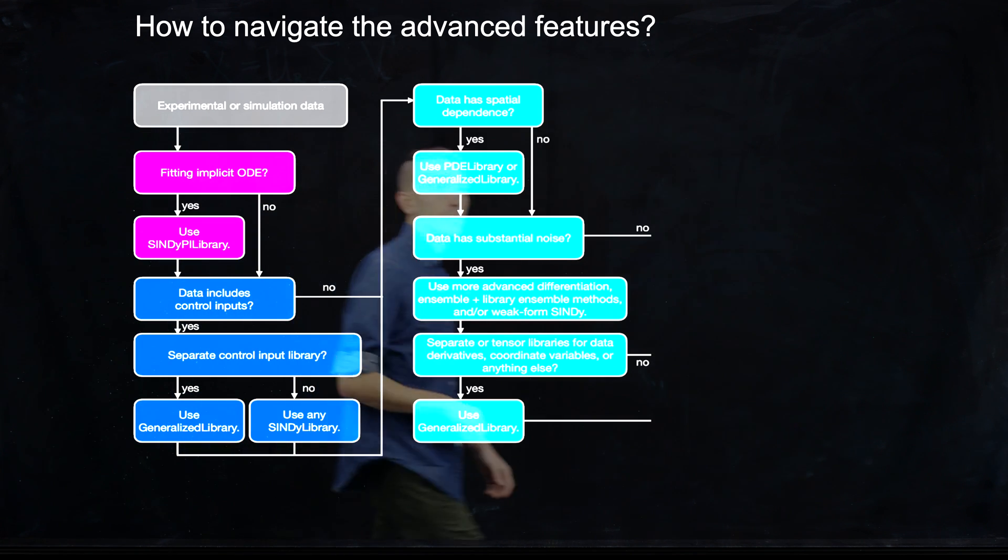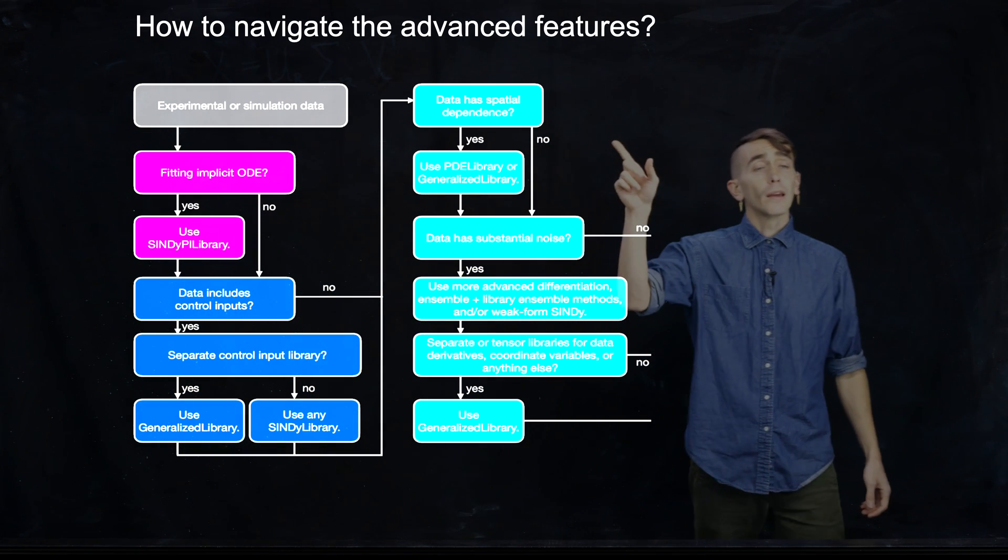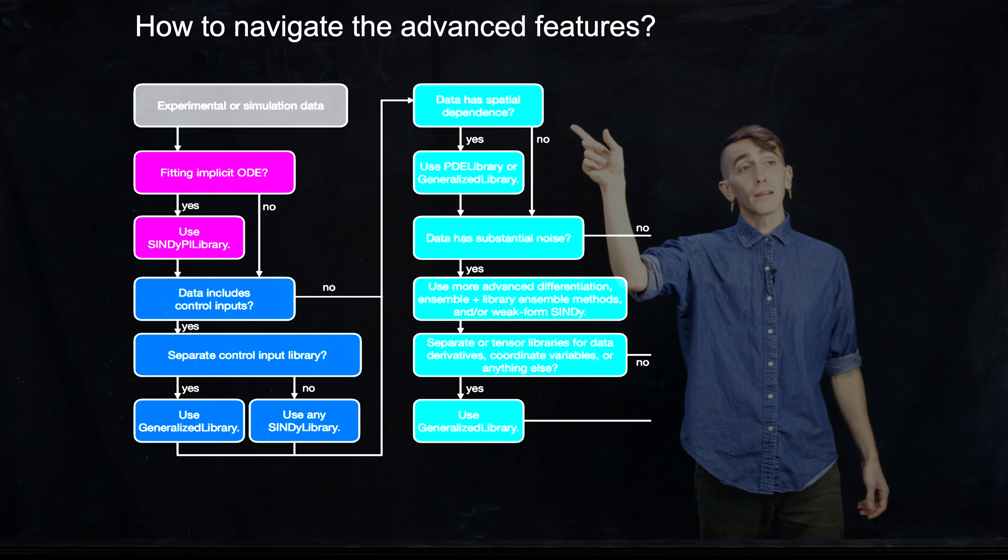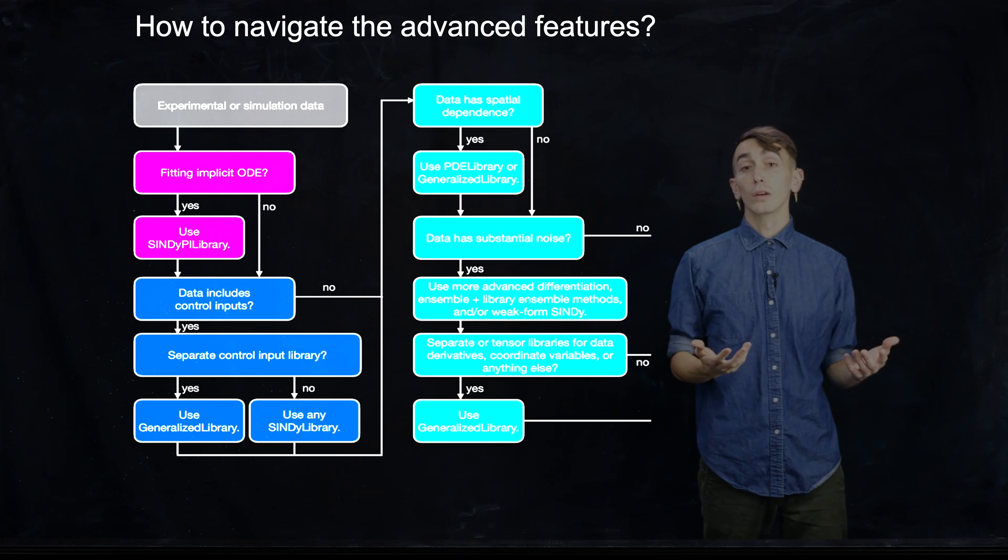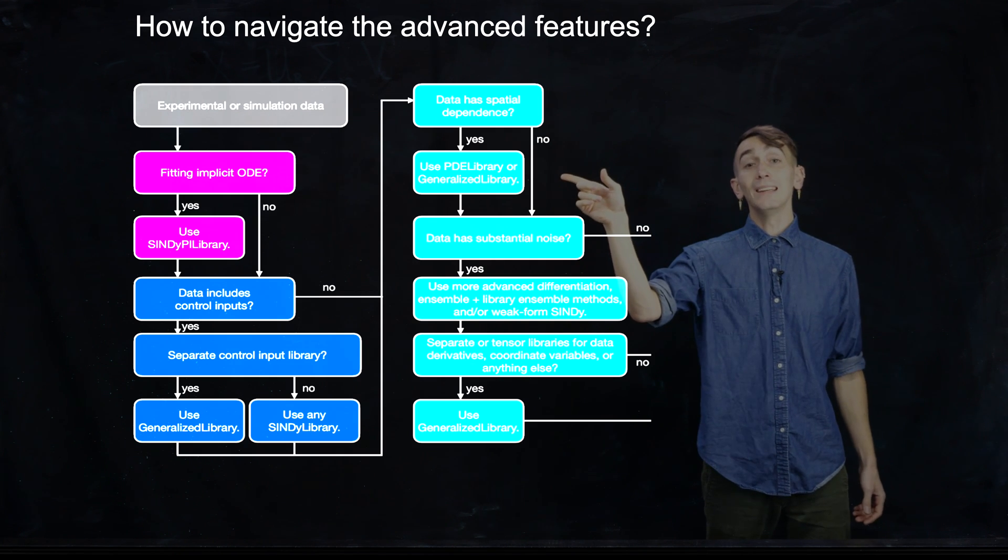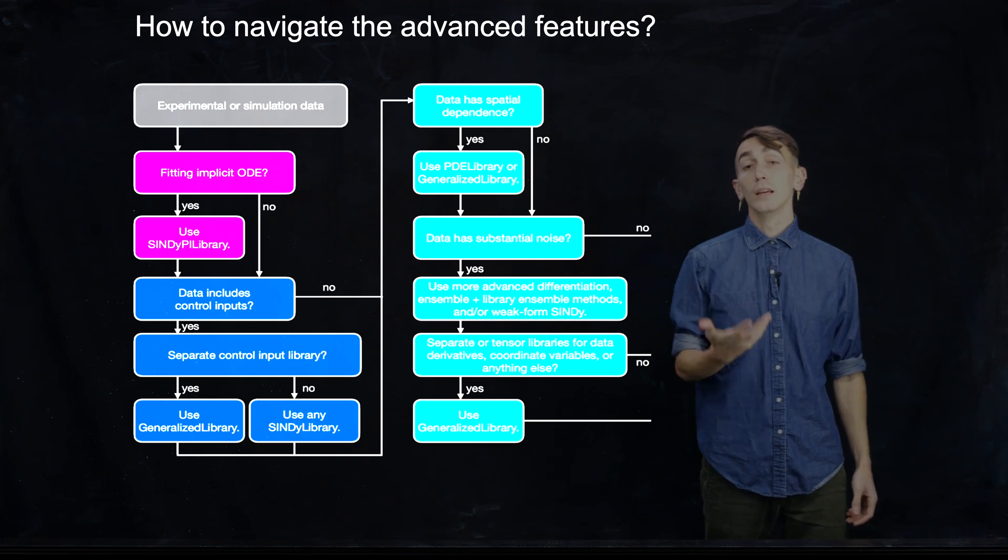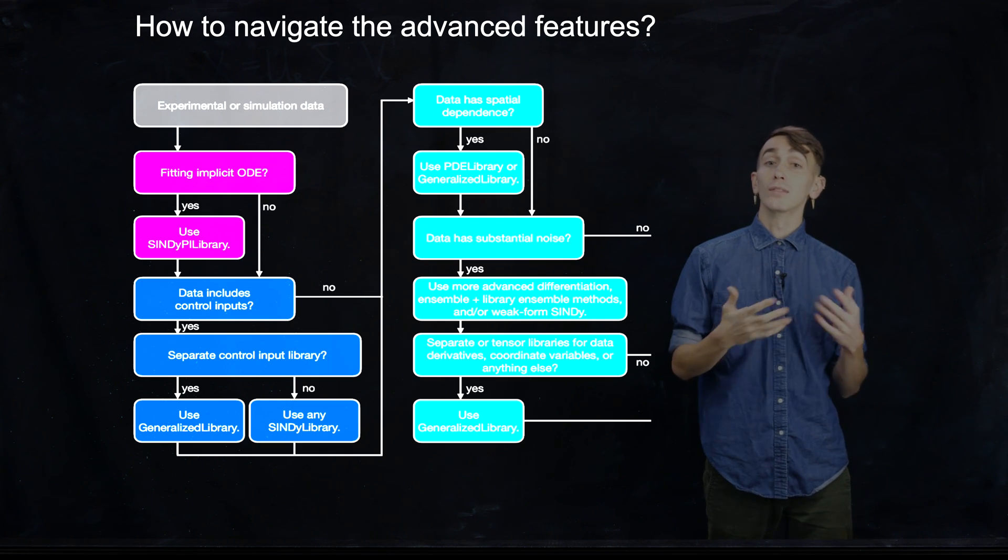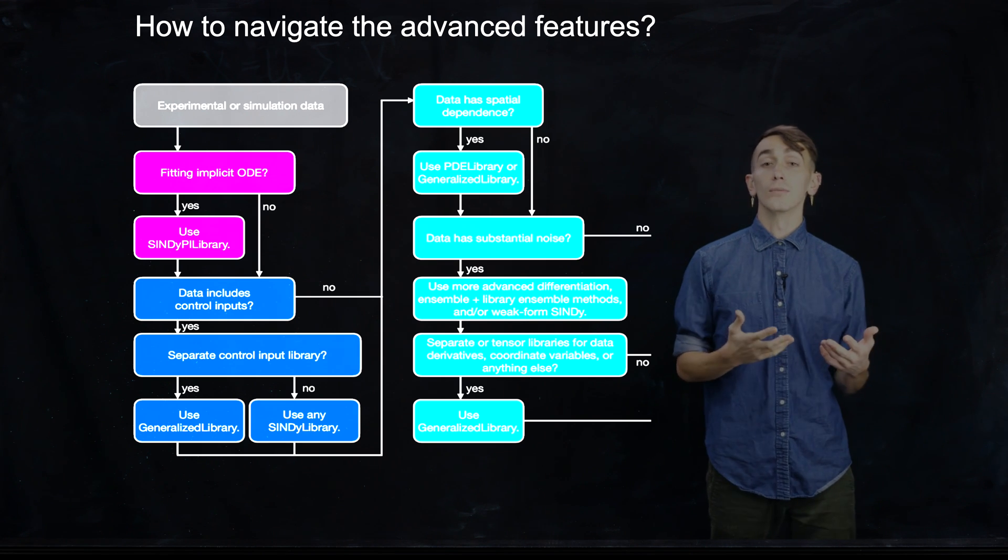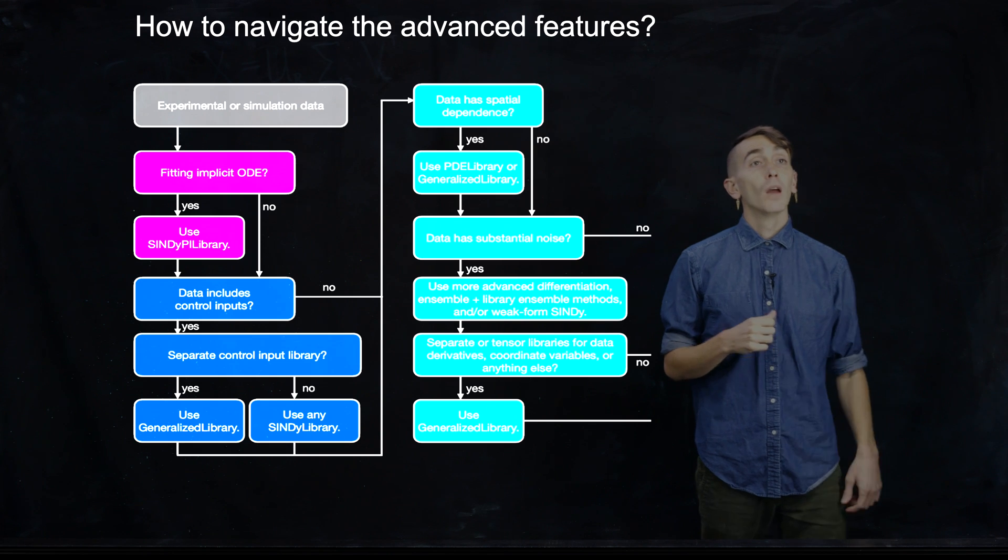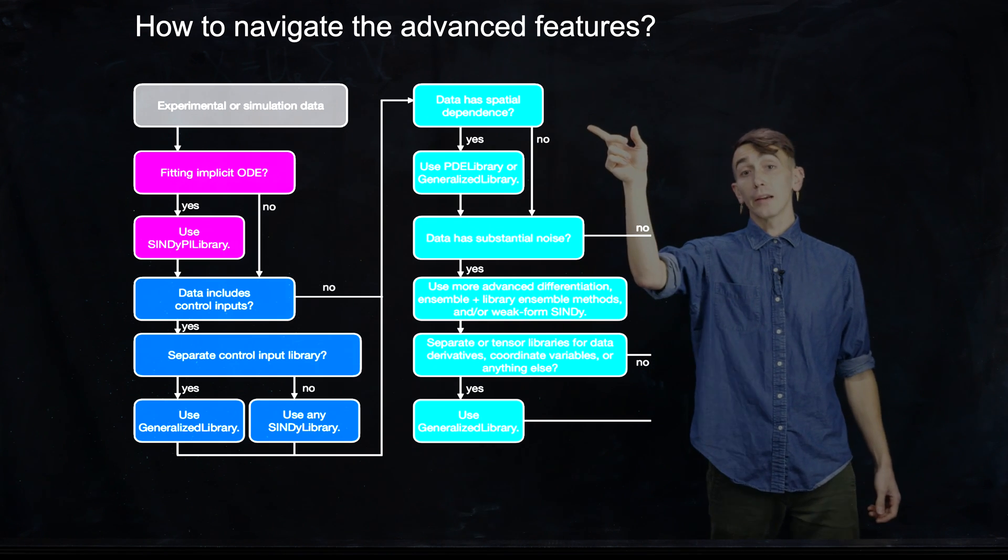And then we can keep going here. So now we ask, okay, does my data have spatial dependence? If it does, then the dynamical system I'm looking for is a partial differential equation. And therefore, I should use the PDE library class in the PySINDy code. I know this is a lot of jargon and a lot of specific PySINDy classes. But I'll be going over these different classes in the following tutorial. So please hang on for me.